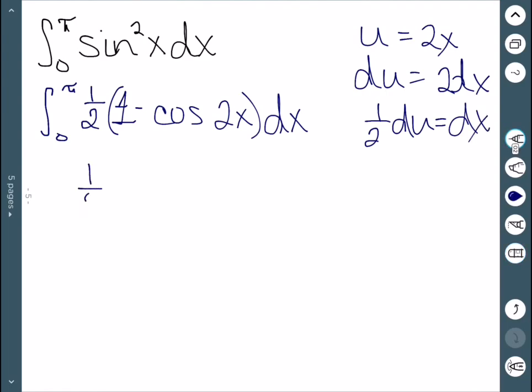And this is now 1 minus cosine u. So du, when x is 0, 2 times 0 is 0. 2 times pi is 2 pi.